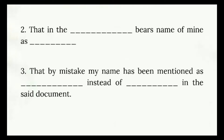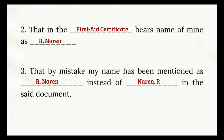Second point: that in the [mention the certificate in which the name was entered wrongly — for me it's the first aid certificate], my name is mentioned as R. Narain. Third point: that by mistake my name has been mentioned as R. Narain instead of Narain R in the said document.